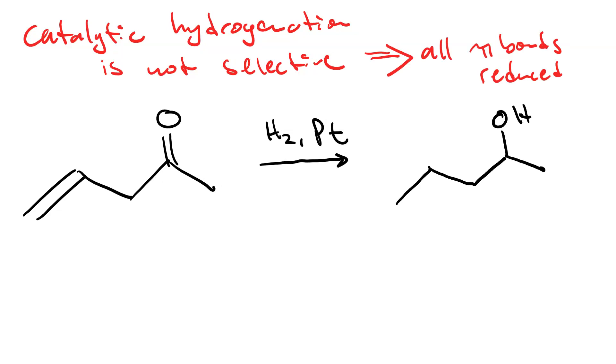What if we just wanted to reduce the carbonyl but leave the CC double bond alone? What reagents could we use here? We need something that preferentially reduces the carbonyl but doesn't go after CC double bonds.